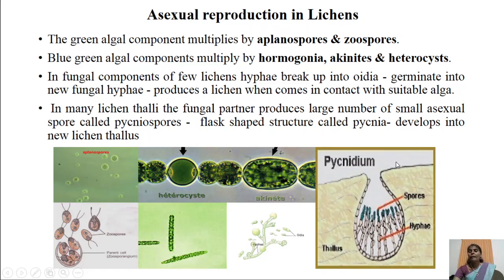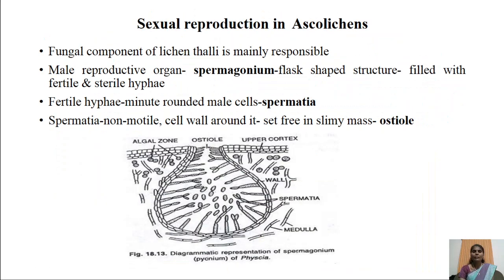Through the ostiole, the pycniospores come out into the external environment. When they come in contact with suitable hyphae, they develop into new lichen thalli. These are the different asexual spores observed in lichen thalli.